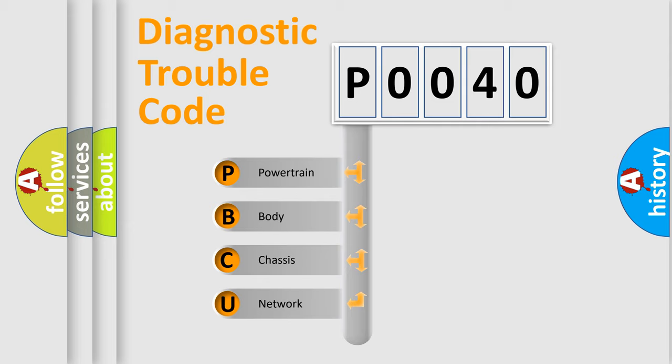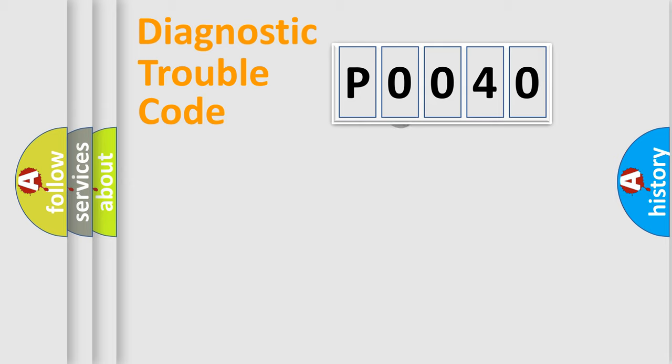We divide the electric system of automobile into four basic units: Powertrain, Body, Chassis, and Network. This distribution is defined in the first character code.